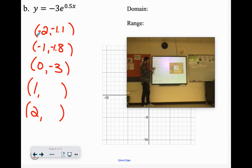If we put in 1, it's a pain to find that e button on my calculator. Negative 4.9. And if I put in 2, I get negative 8.2.